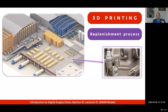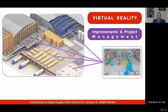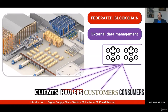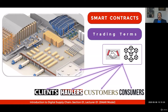You'll be able to see how 3D printing may increase the speed of replenishment processes within a warehouse and help avoid disruption of goods. You will see how virtual reality applications will help you improve and manage projects within the warehouse. You will also learn how to use private blockchains to manage internal data and federated blockchain to manage external data with clients, haulers, customers, and consumers. We'll go through the concept of smart contracts and understand how trading terms will be managed in the context of blockchain.